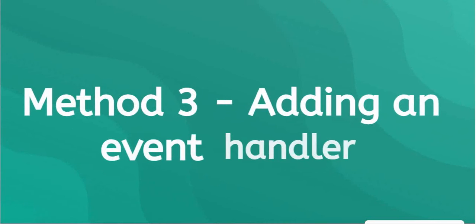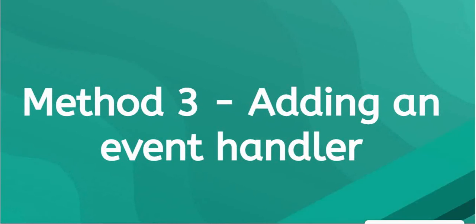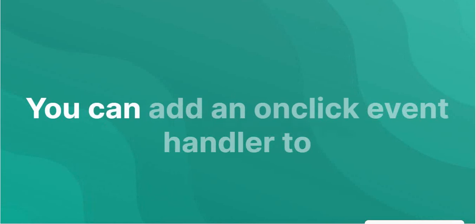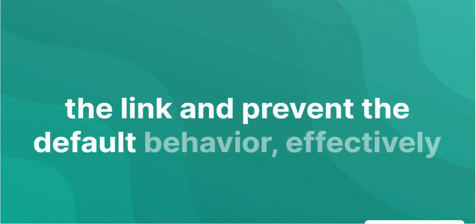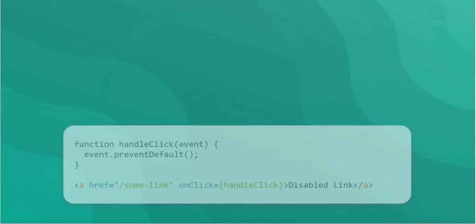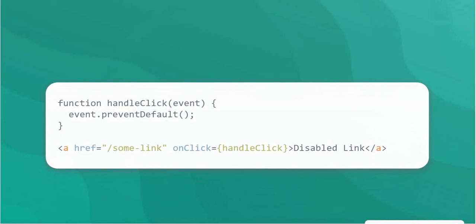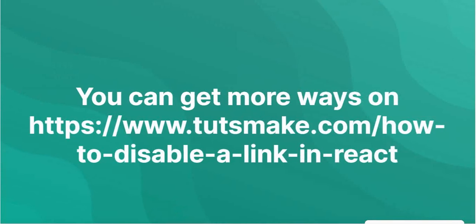Adding an event handler — you can also use the onClick event to disable the link. Add an onClick event handler to the link and prevent the default behavior, effectively disabling the link. More ways available on https://www.tutsmake.com.